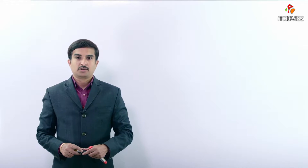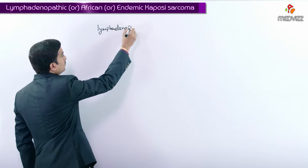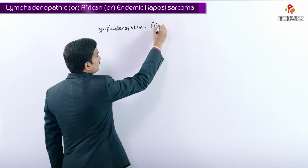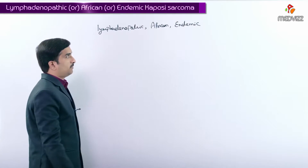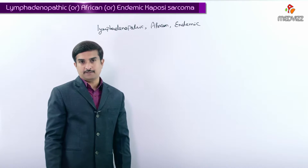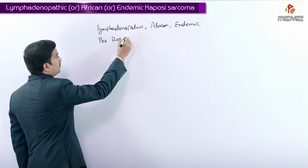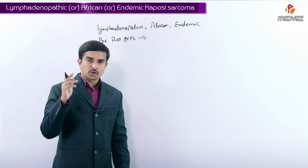Under the epidemiological classification of Kaposi sarcoma, we are going to discuss the second type, which is called lymphadenopathic, or African, or endemic Kaposi sarcoma. Under this epidemiological classification, we need to discuss what the predominant risk groups are, as well as the most common anatomical sites for this Kaposi sarcoma.